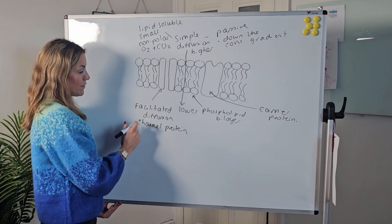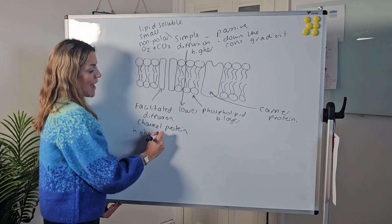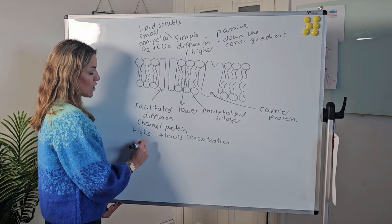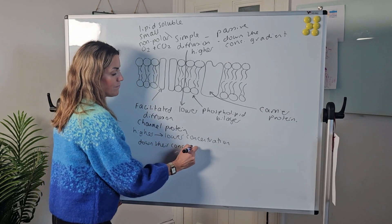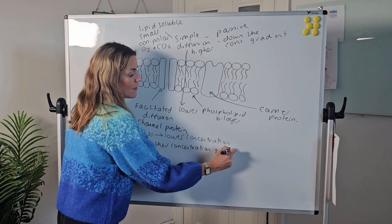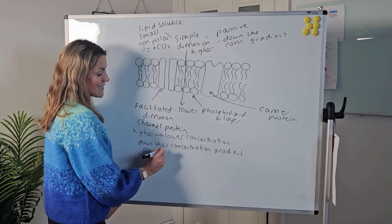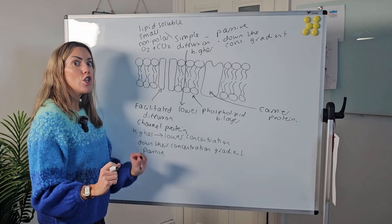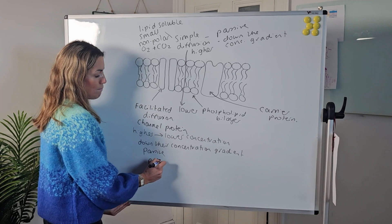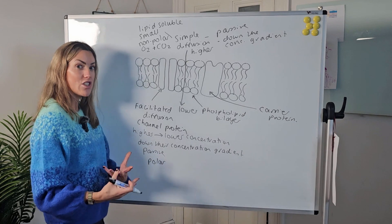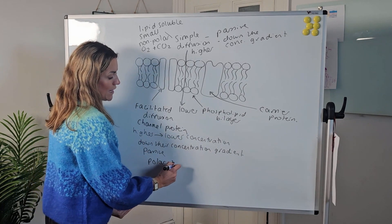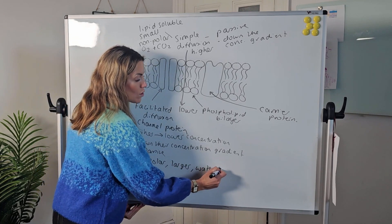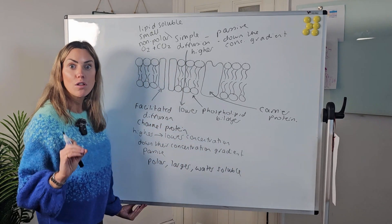Because it is still diffusion, we're still moving substances from a higher to a lower concentration, or down their concentration gradient, and it is still passive. It does not require ATP or energy. The substances that are going to use facilitated diffusion are going to be polar, so charged or they have an uneven distribution of charge, or they might be larger substances so they can't pass through the phospholipid bilayer, or they might be water soluble and not lipid soluble.